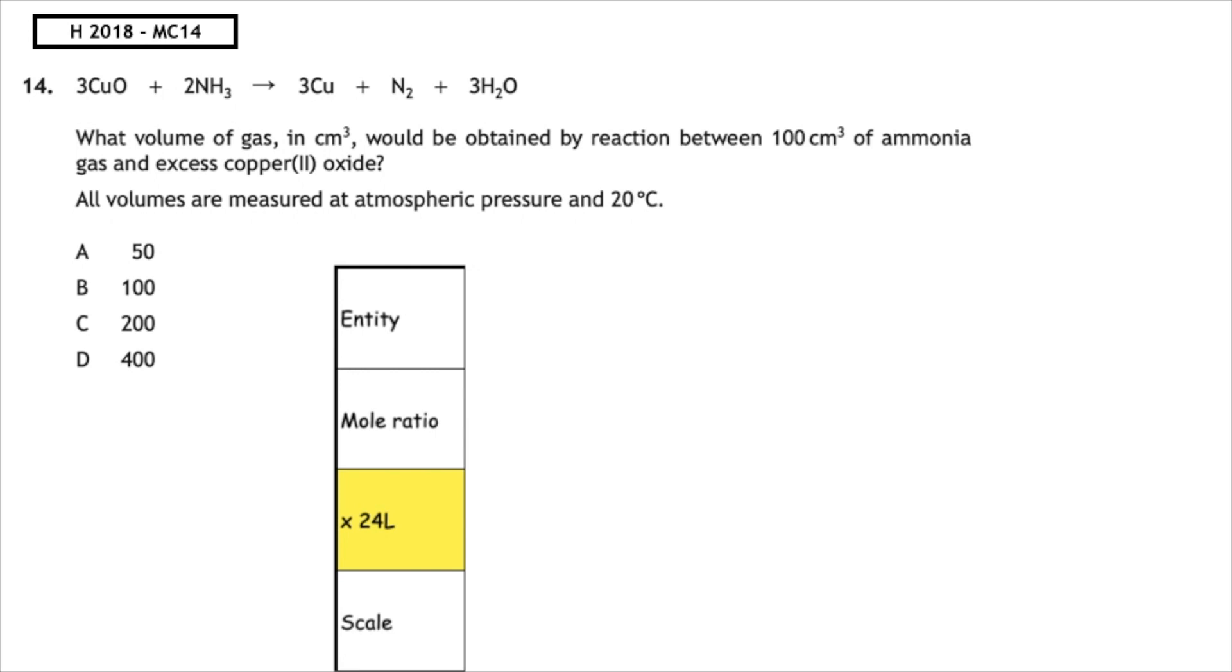The first thing we have to do is pick out our entities. Our reactant is ammonia, which has the formula NH3. And the only gas product would be nitrogen, which is N2. We then do our mole ratio from the balanced equation. We've got two ammonia and one nitrogen.